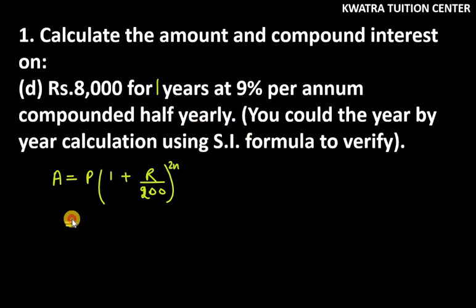So for half yearly, we need to use the formula with the given conditions to find amount and compound interest. The principal is 8,000, rate is 9, and in the denominator we'll have 200, with 2n where n equals 1, since 1 year is given.